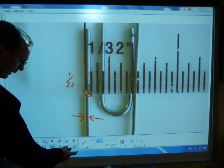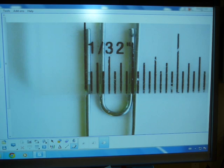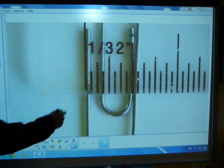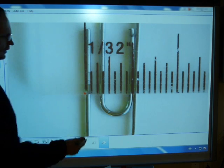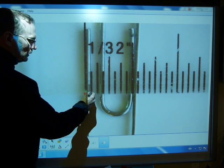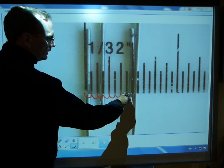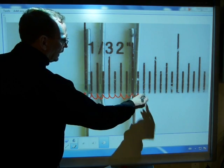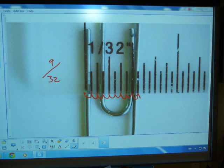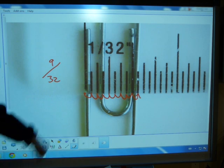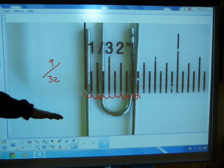To measure the whole width of the finished product, you can do the same thing. Start at zero, count every 32nd, count the increments. That's 1 jump, 2, 3, 4, 5, 6, 7, 8, 9. 9 jumps is 9/32nds of an inch, end of story. The width of the paper clip is 9/32nds of an inch.